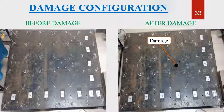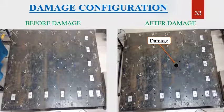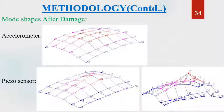This is the damage configuration. Modal analysis was then extended to locate damage in the plate. The plate was divided into elements and an artificial damage was created at the 15th element of the plate as shown in the figure. Mode shapes obtained after the damage show that mode shapes from the accelerometer are as smooth as before the damage, but in the case of piezo sensor there is a change in curvature at the location of the damage.